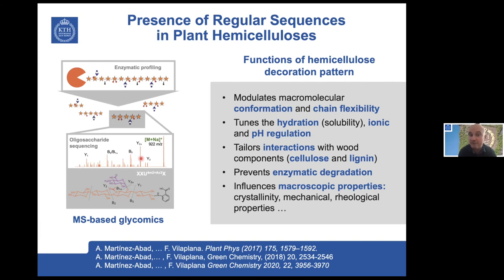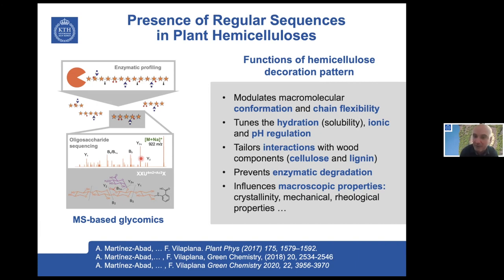We now know that different sequences are able to modulate macromolecular conformation and chain flexibility. They also fine-tune the hydration or aggregation possibilities of hemicelluloses, tailor interactions with other components in plant cell walls — with cellulose and lignin — prevent enzymatic deconstruction, and influence macroscopic functional properties like rheological properties in different hemicellulose applications.